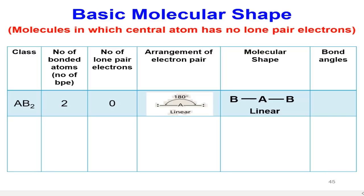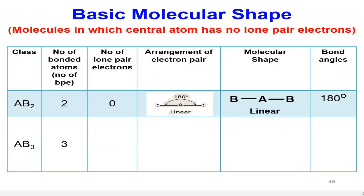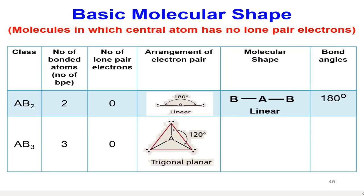The next shape is trigonal planar. The class is AB3, meaning there are three electron pairs around the central atom. These three electron pairs arrange as far apart as possible to minimize repulsions, so the bond angle is 120°.